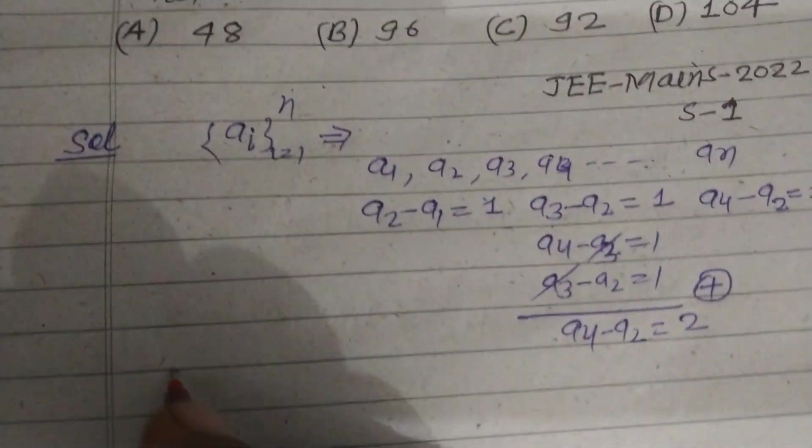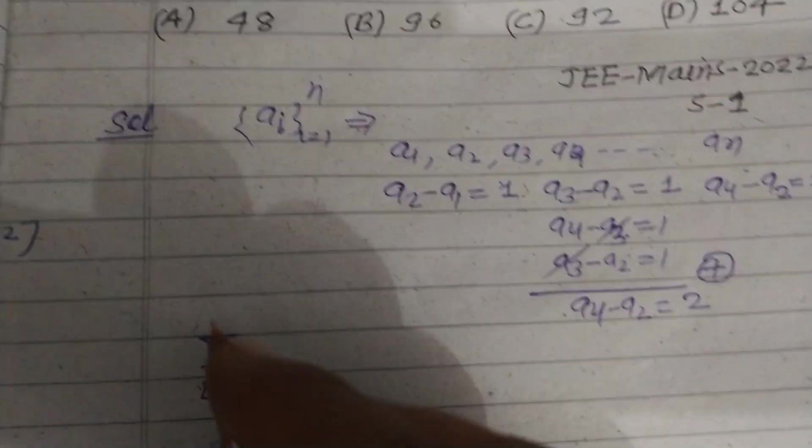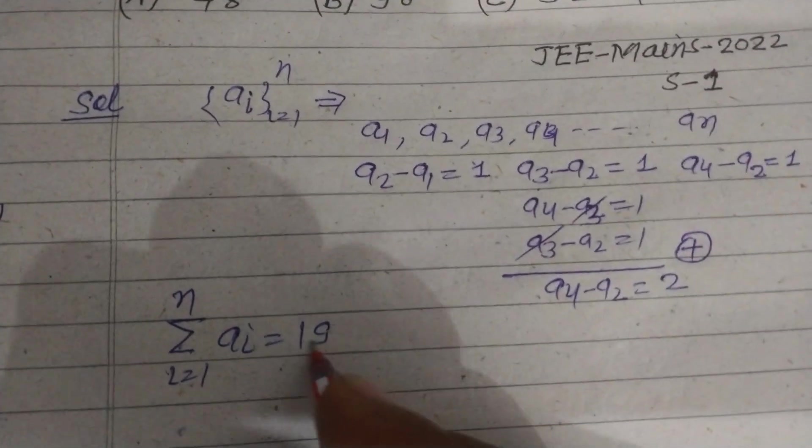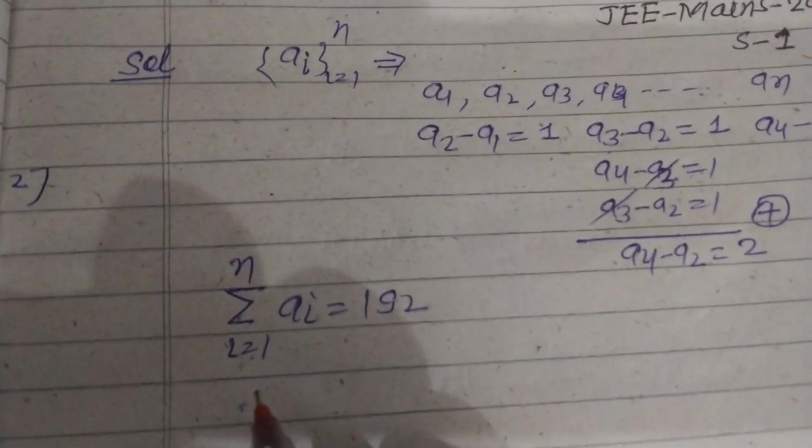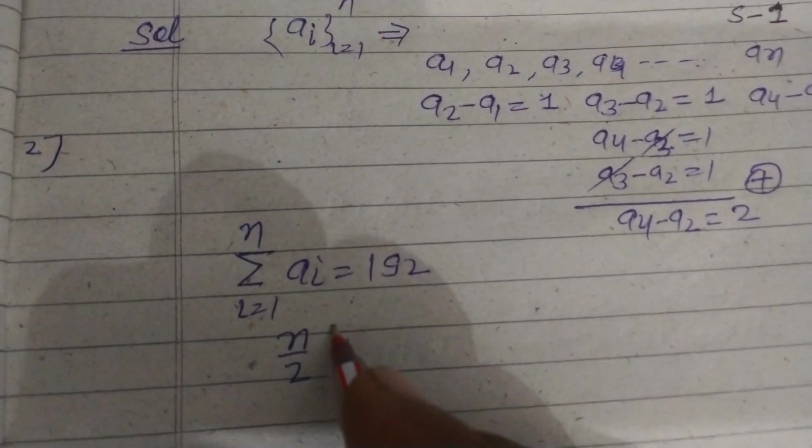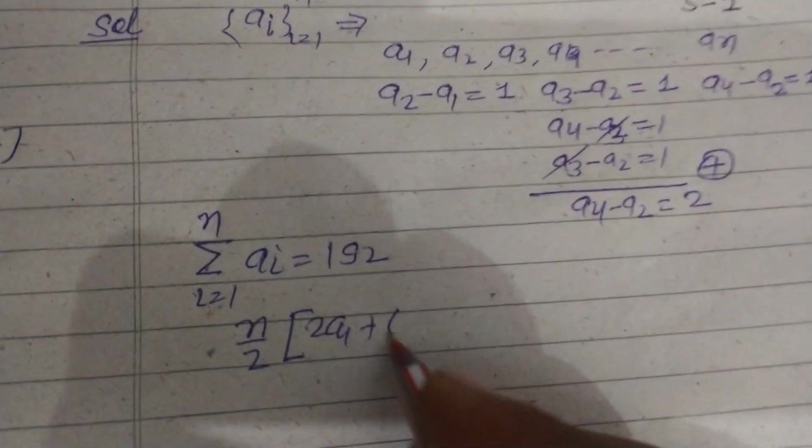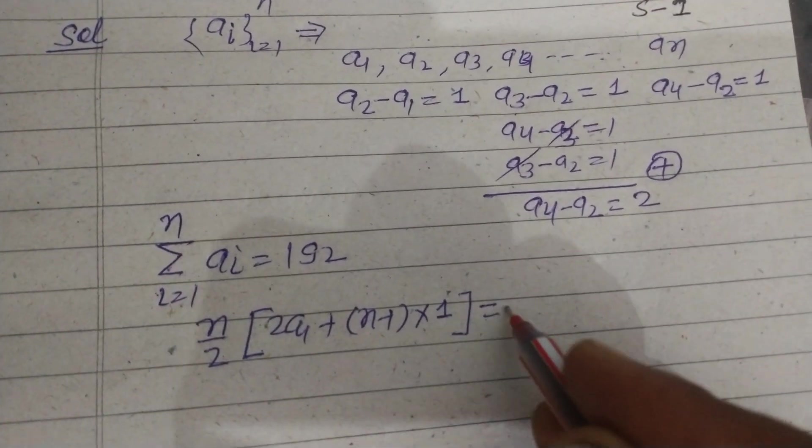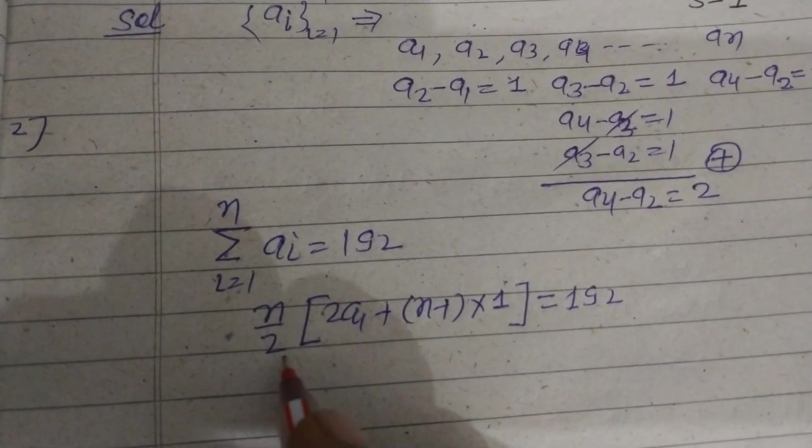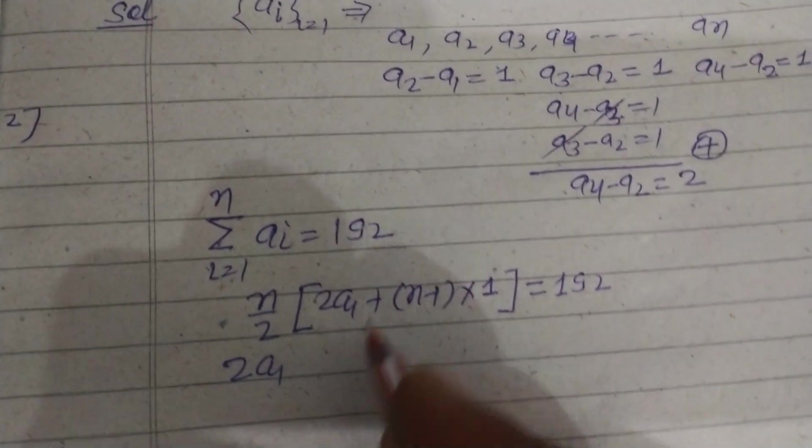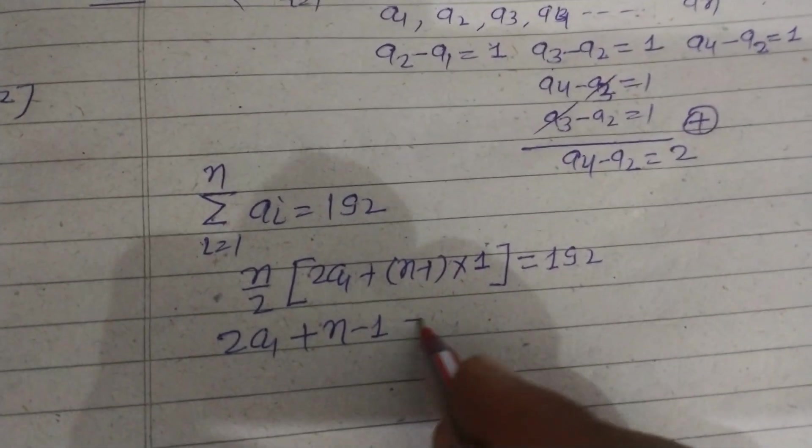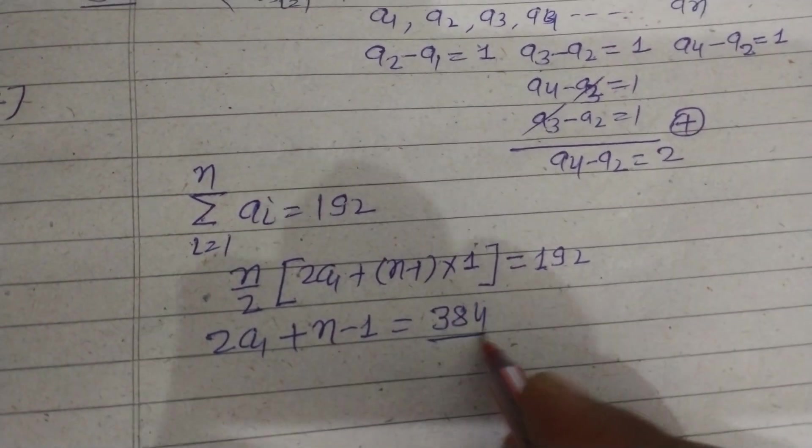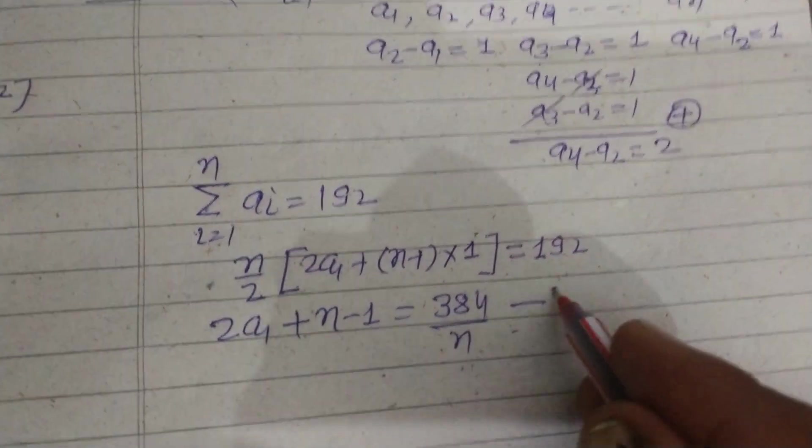Here it is given that sigma i=1 to n of ai equals 192. This is the sum of n terms, so n/2 times [2a1 plus (n-1) times 1] equals 2 times 192, which becomes 384 upon n. So this is our first equation.